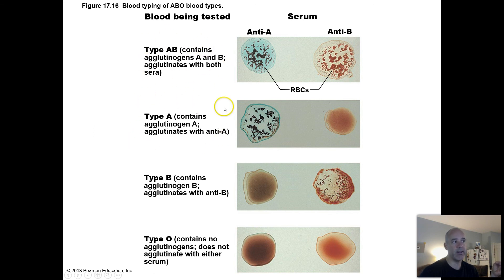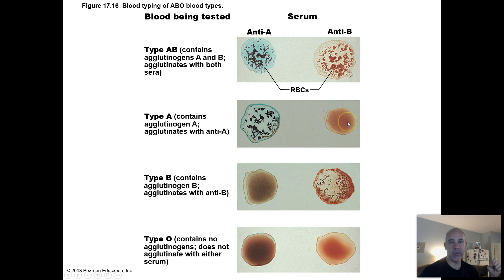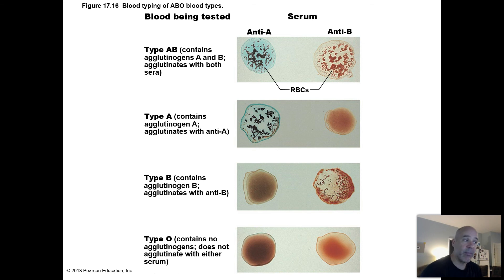Let's say you have type A blood. You've only got A antigens on the surfaces of your red blood cells. When you mix the anti-A antibodies with your blood, it's going to clump. You don't have any B antigens, so the anti-B antibodies are not going to attach — no clumping. The reverse would happen with type B blood: your red blood cells would clump with anti-B antibodies but not with anti-A. And finally with type O, you don't have any A or B antigens, so your blood should not agglutinate with either anti-A or anti-B antibodies.